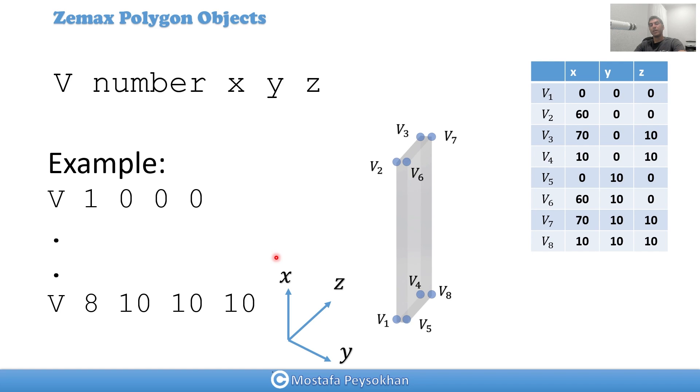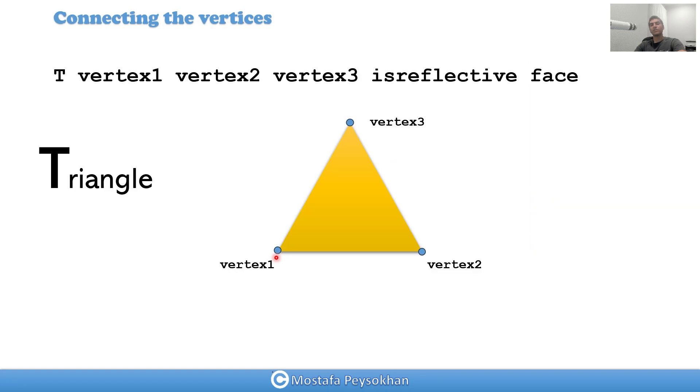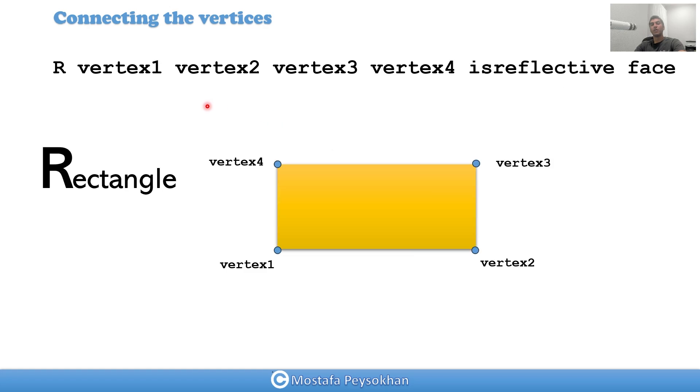That was for my vertices. Now, from these vertices, we want to make our faces. But for faces, we have some rules. We only have two kinds of faces in Zemax polygon object. We can have triangular shape, or we can have rectangular shape. For triangular shape, because triangle starts with T, the code is T, space, vertex 1, vertex 2, vertex 3, that's a random number. And we have is-reflective face. The important part is those numbers that we put. And then for R, because it's a rectangle shape, R, because rectangle starts with R, we have vertex 1, 2, 3, 4.